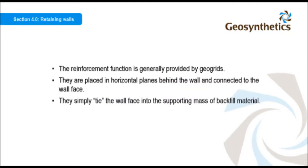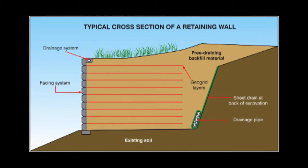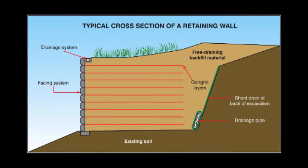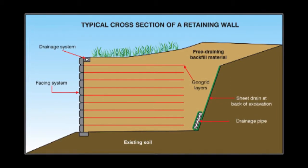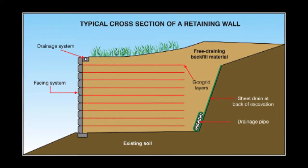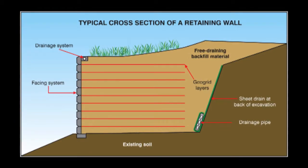The reinforcement function is generally provided by geogrids. They are placed in horizontal planes behind the wall and connected to the wall face. They simply tie the wall face into the supporting mass of backfill material. In this cross section you can see the geogrids connecting to the wall face. Gravel is placed around the geogrid to prevent the wall from simply pulling it out of the soil.